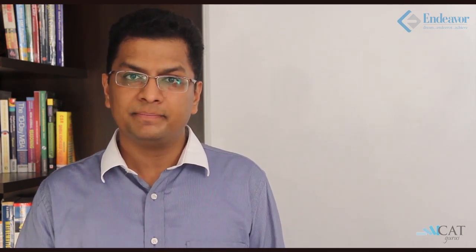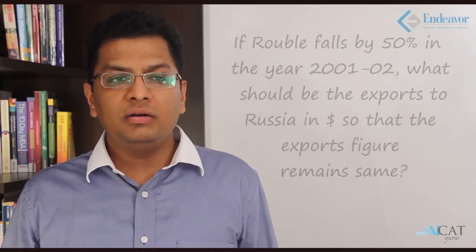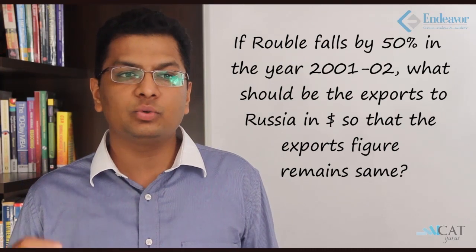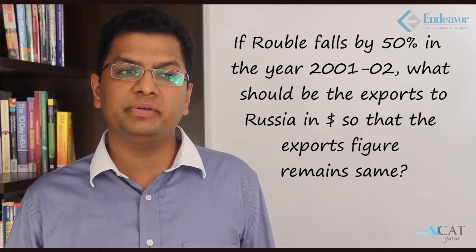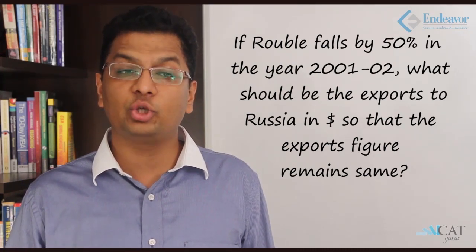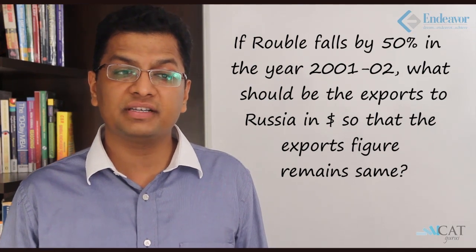Let's have a look at the next question. If ruble falls by 50% in the year 2001-2, what should be the exports to Russia in dollars so that the export figures remain the same? Tricky question, isn't it? Ruble first of all is the currency of Russia. If it falls by 50%, I'm unable to create a link between this fall and the corresponding change.